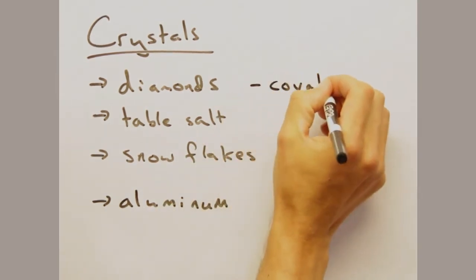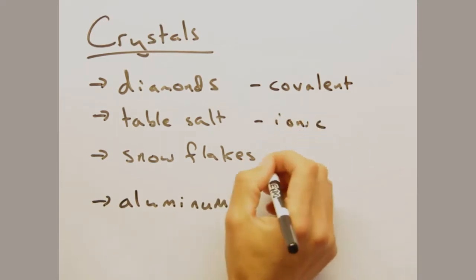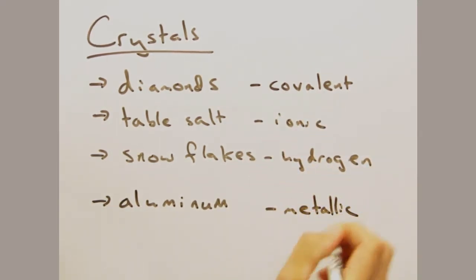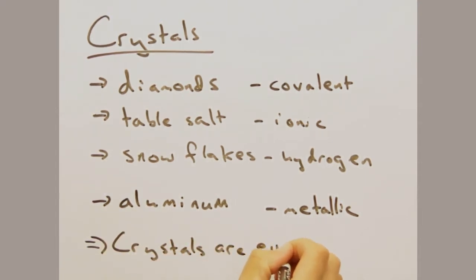One thing to notice is the different bonding that exists in each of these examples. We have examples of covalent, ionic, hydrogen, and metallic bonding, indicating that crystals form regardless of the bonding present. Indeed, most solids can be formed as a crystal.